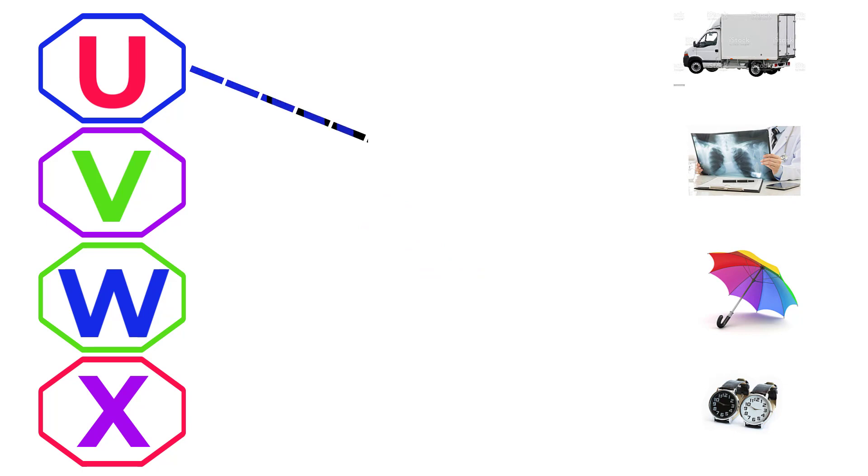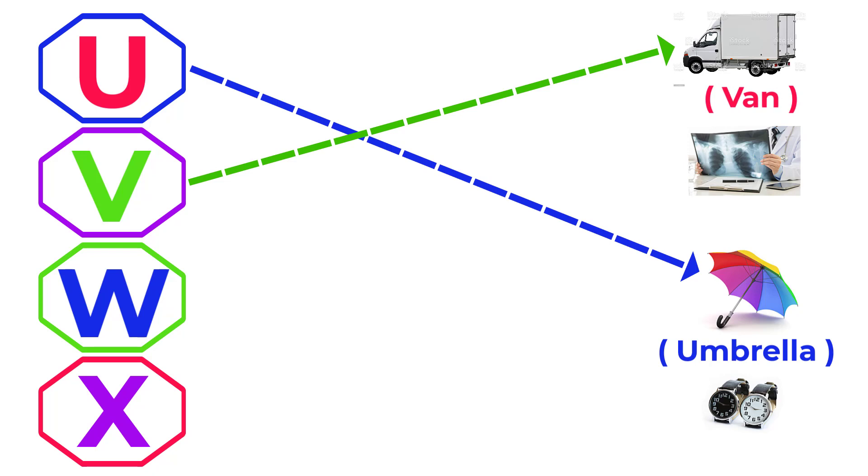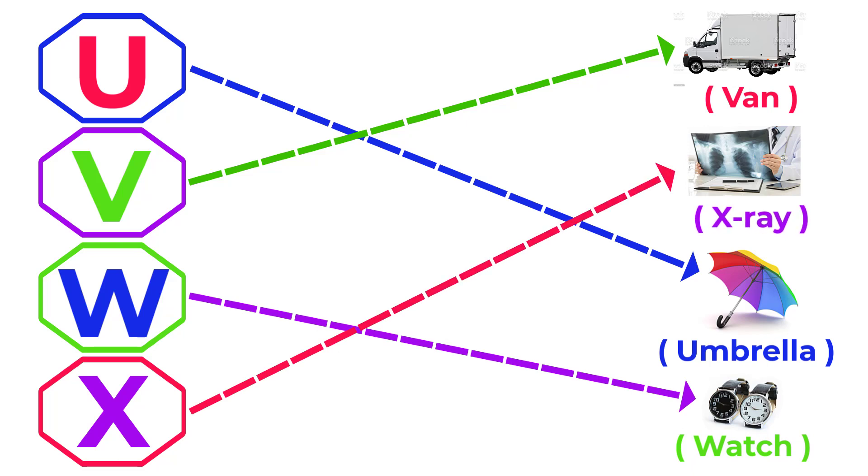U for umbrella, V for van, W for wash, X for x-ray.